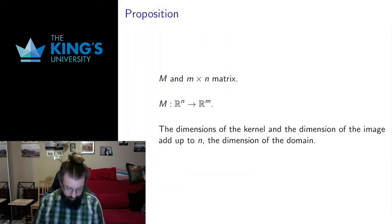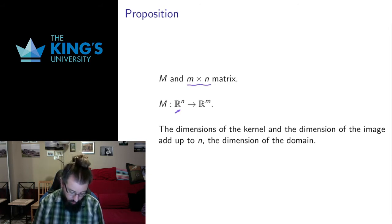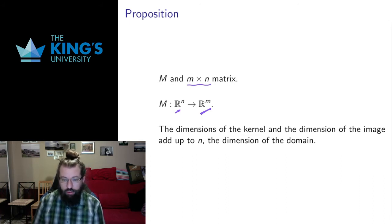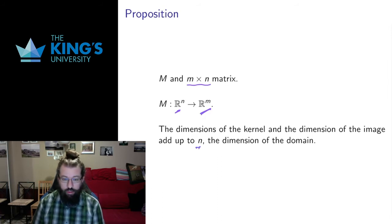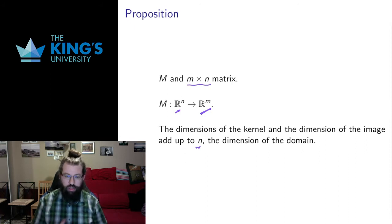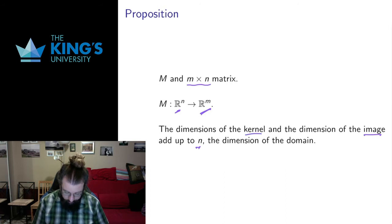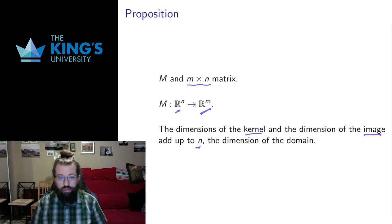The first thing I want to prove is: taking an m by n matrix — a matrix with domain Rn and target space Rm — the dimension of the kernel and the dimension of the image add up to the dimension of the domain. This is a really nice thing to know. It tells us some balance, and it tells us what the matrix destroys and what the matrix preserves. The image gives all outputs — those are the dimensions that are preserved. The kernel is everything that gets sent to zero — those are the dimensions that are destroyed.